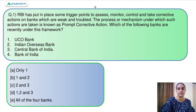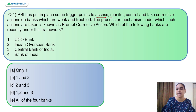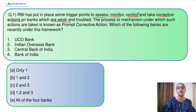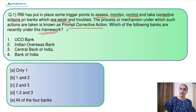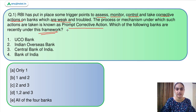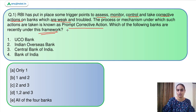Question number 1 says: RBI has put in place some trigger points to assess, monitor, control and take corrective action on banks which are weak and troubled. The process or mechanism under which these actions are taken is called Prompt Corrective Action. Which of the following banks are recently under this very framework? Let's first discuss what the PCA framework is.